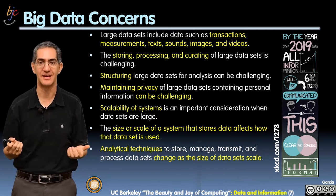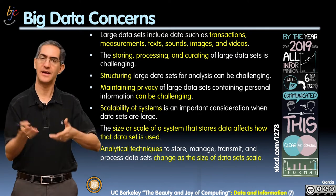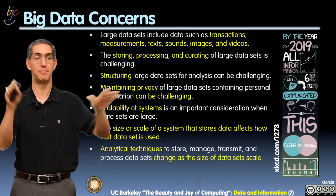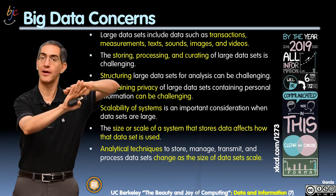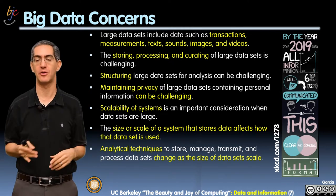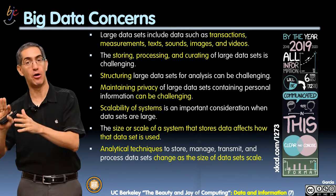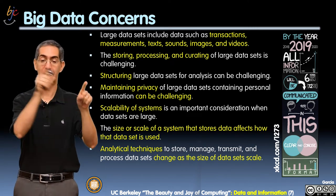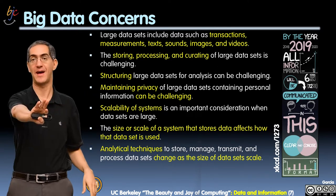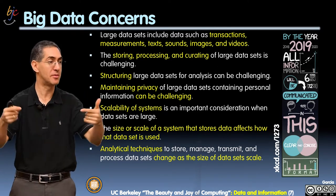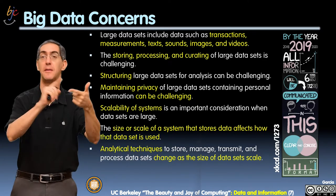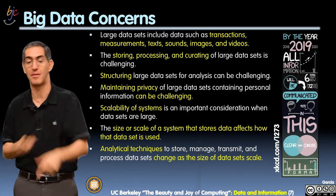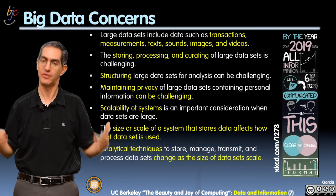Maintaining privacy is a critical concern. Once you have lots of different data sources that seem independent, because they're so large, you can cross-correlate them and figure out who someone is. For example, cross-correlating Yelp reviews with Foursquare check-ins: one account has your name, another has your address, another has something else. Computers figure out it's the same person, and suddenly someone knows your name, address, and picture — all correlated together.